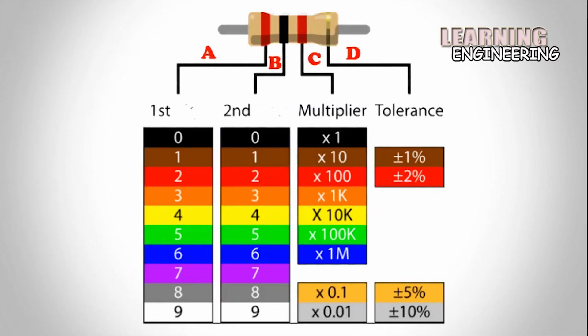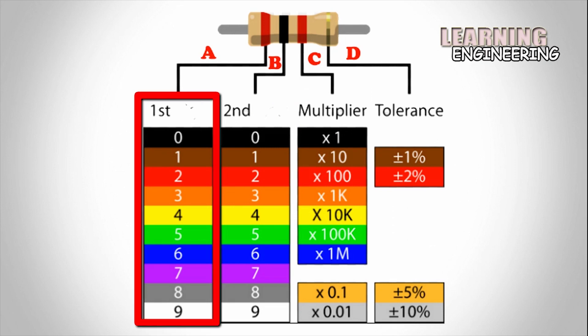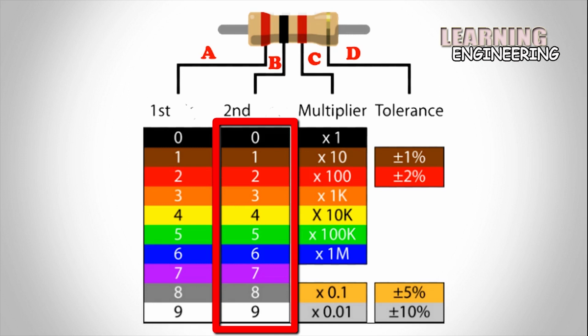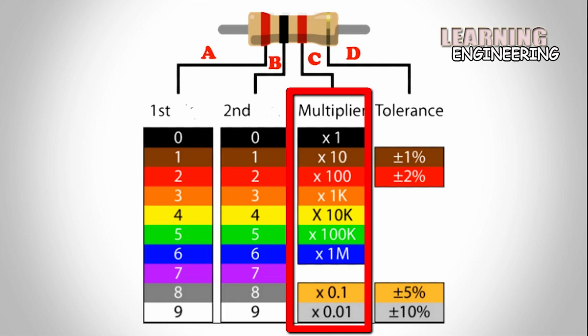First, I show you the color chart of the resistor and calculate the 4 color band resistor. Band A is the first significant figure of component value. Band B is the second significant color. Band C is the decimal multiplier.